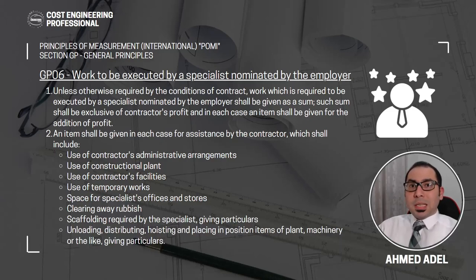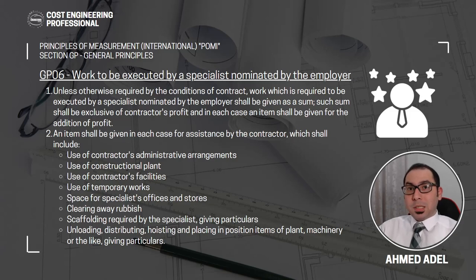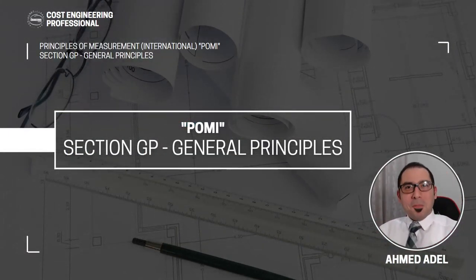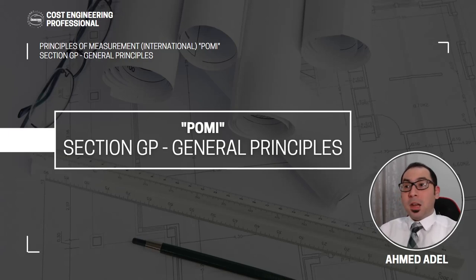You have seen provisional sums in all the BOQs — they keep the provisional sum in one line item and add another item for contractor attendance, overheads, and profit. Hello guys and welcome. I am Ahmed Adel and this is Cost Engineering Professional. In this video we'll be talking about the general principles of POMI part 2.